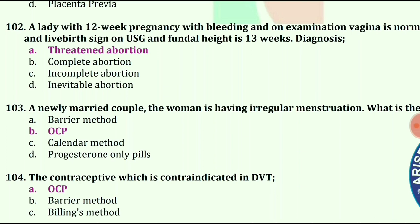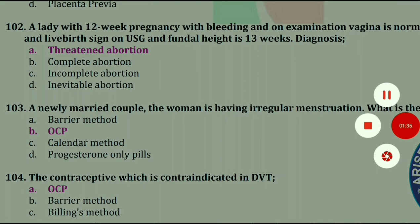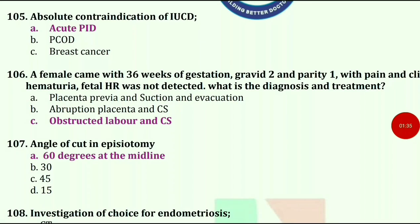The contraceptive which is contraindicated in DVT is OCP (oral contraceptive pills). Absolute contraindication of IUCD is acute PID.